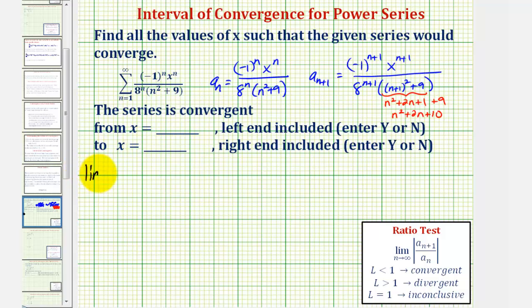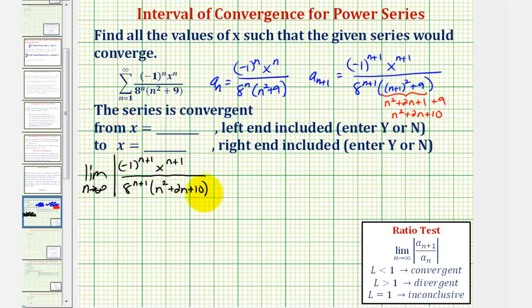Now we'll take the limit as n approaches infinity of the absolute value of a_{n+1} divided by a_n. But instead of dividing, we'll multiply by the reciprocal of a_n. So first we have a_{n+1}, and then times the reciprocal of a_n — which gives us eight to the nth times the quantity n squared plus nine, divided by negative one to the nth times x to the nth.